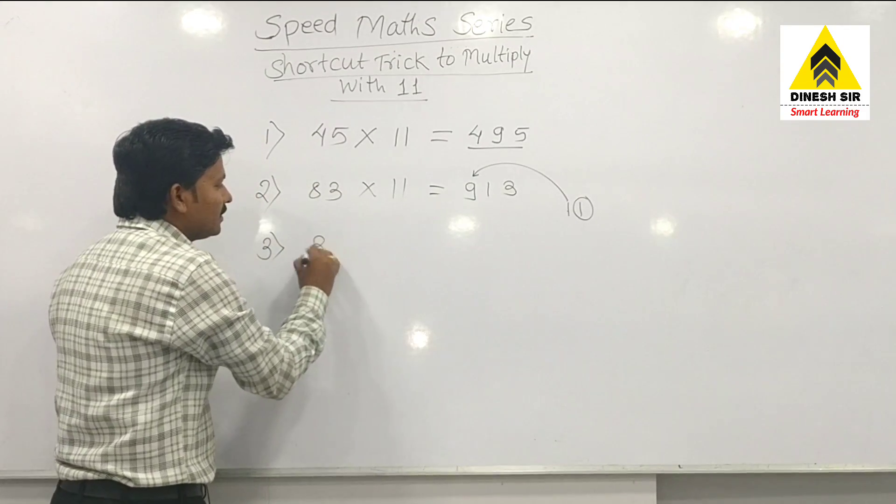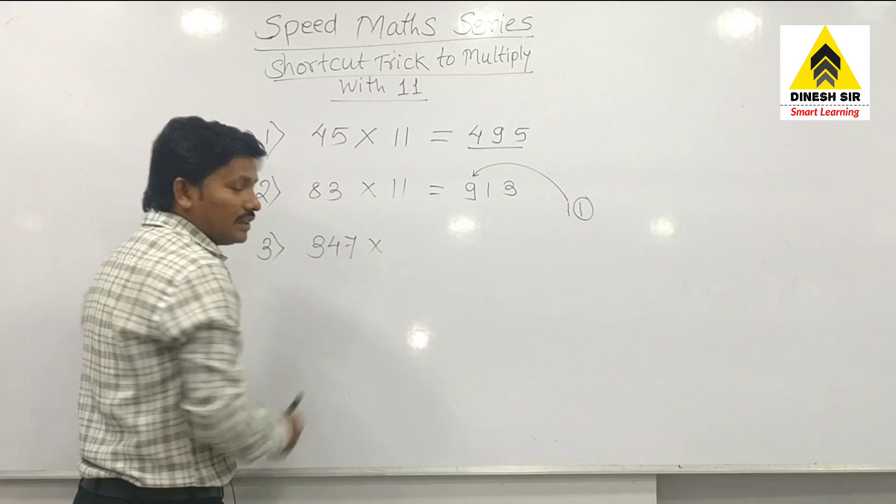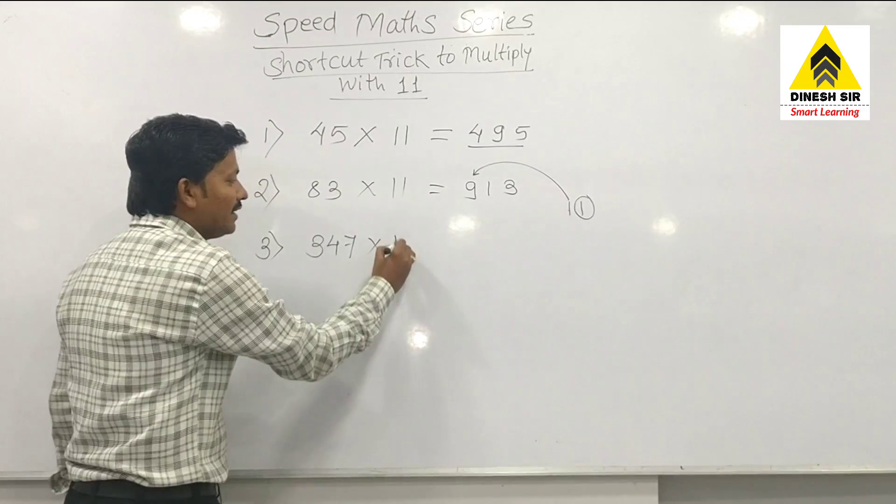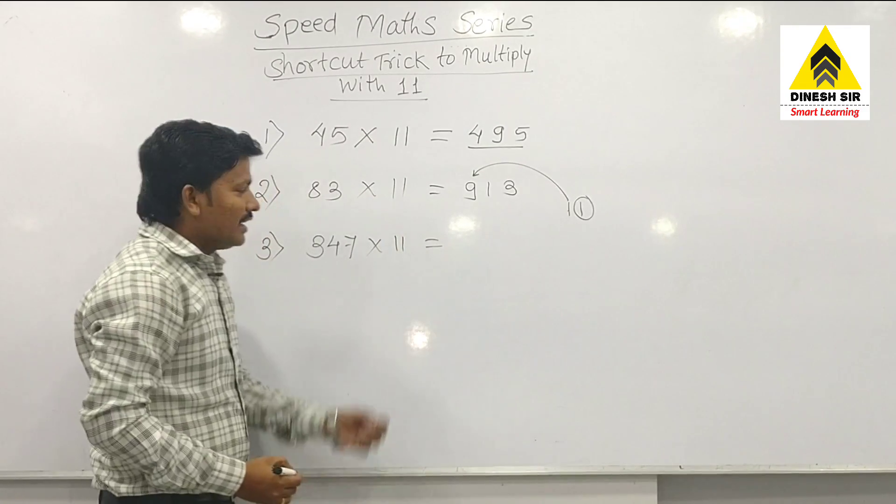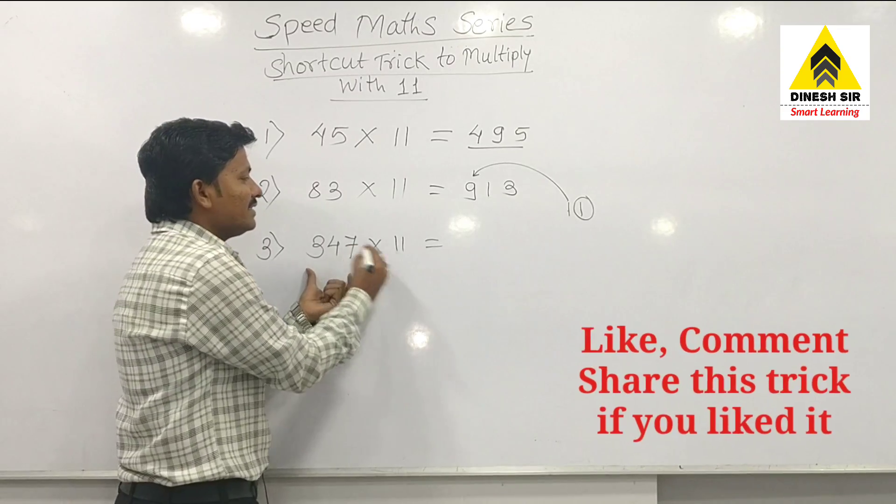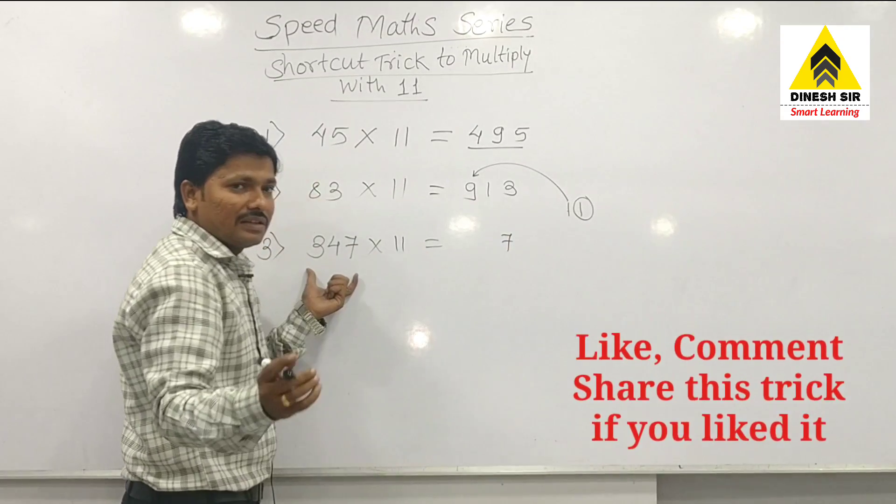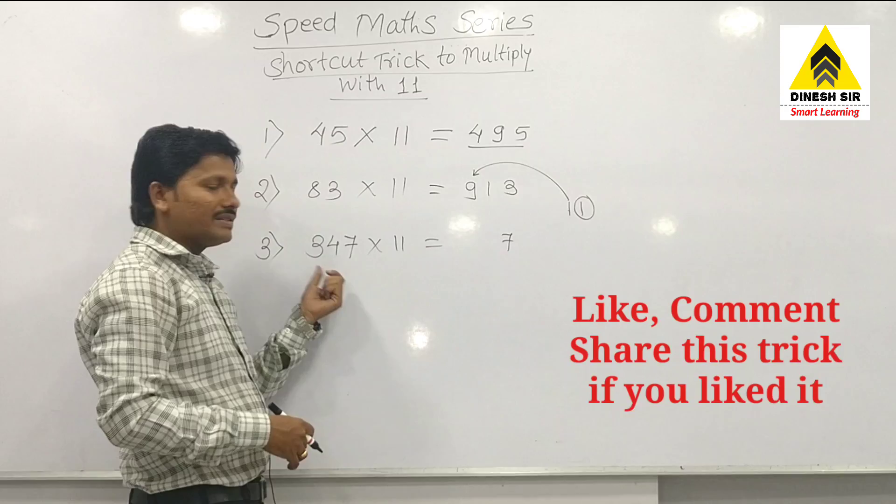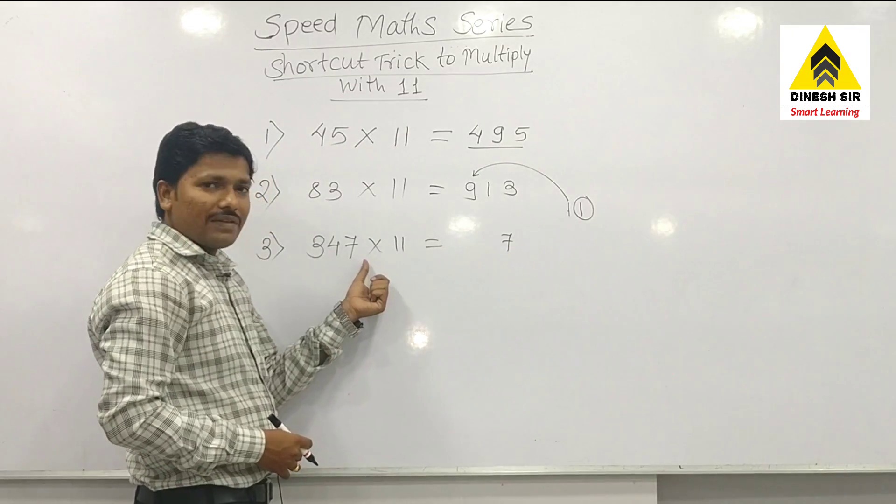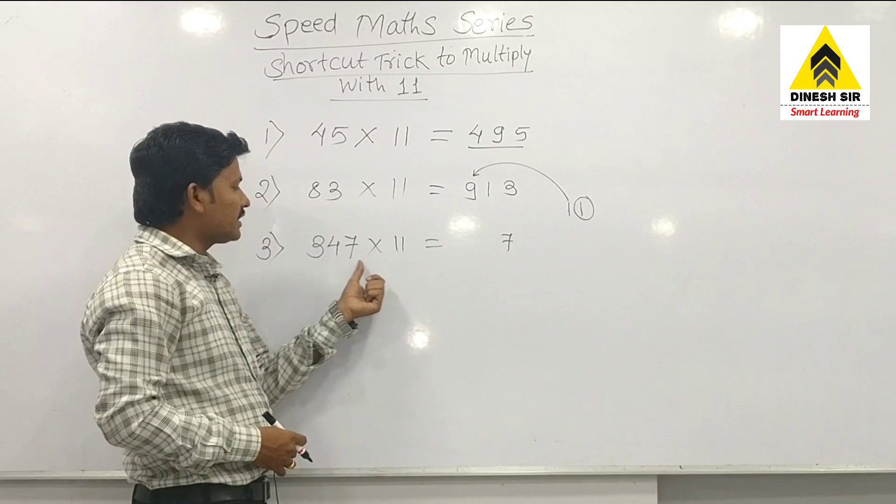Let us take a 3-digit number: 347, and multiply this with 11 with the same trick. Here the last digit is 7. Let us try from the last digit, 7. Now add this 7 with the 4. 7 and 4 becomes 11.